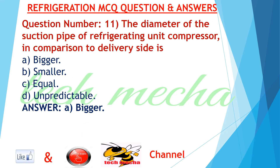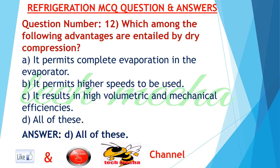Question number 11: The diameter of the suction pipe of a refrigerating unit compressor in comparison to the delivery side is A. bigger, B. smaller, C. equal, D. unpredictable. Answer: A. bigger.